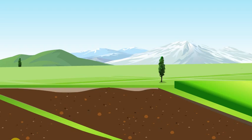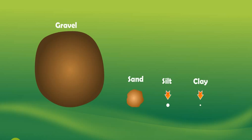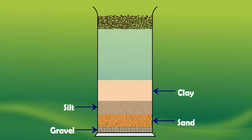On the basis of their sizes, the rock particles present in soil can be divided mainly into four groups: clay, silt, sand, and gravel. One, the smallest rock particles present in soil form clay. Two, the rock particles which are a little larger than clay particles form silt. Three, rock particles larger than silt particles form sand. Four, the largest sized rock particles present in soil are called gravel.